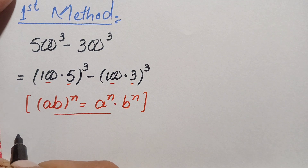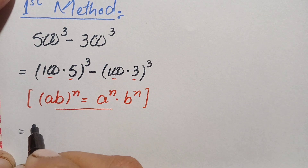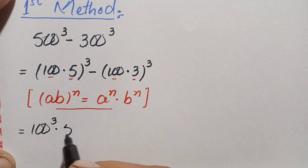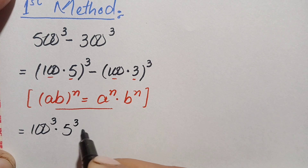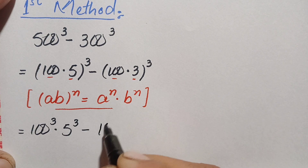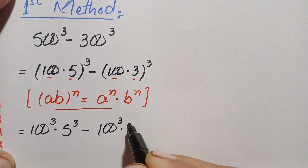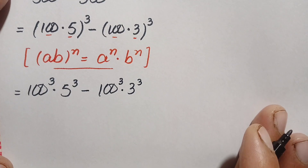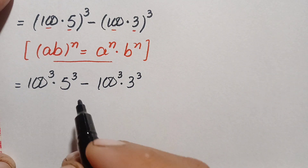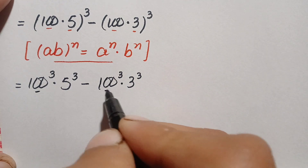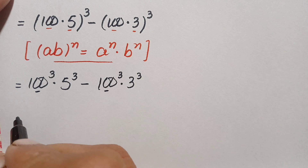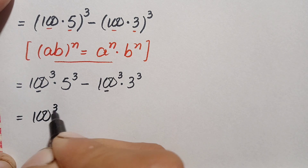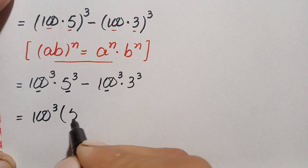So this will become 100 cubed times 5 cubed, minus 100 cubed times 3 cubed. Now we will take out 100 cubed as a common factor from both terms, leaving 5 cubed minus 3 cubed inside the brackets.